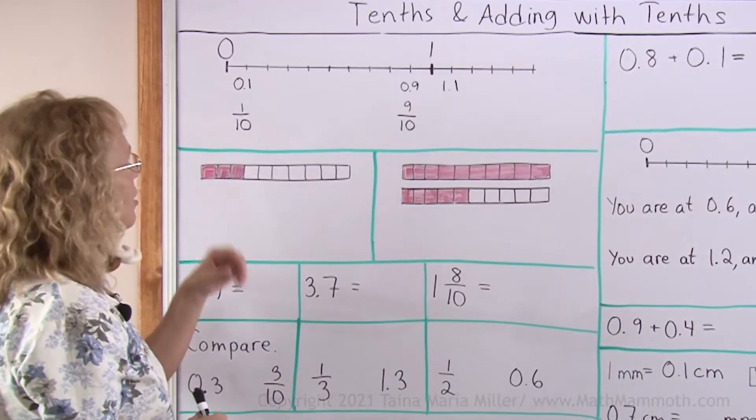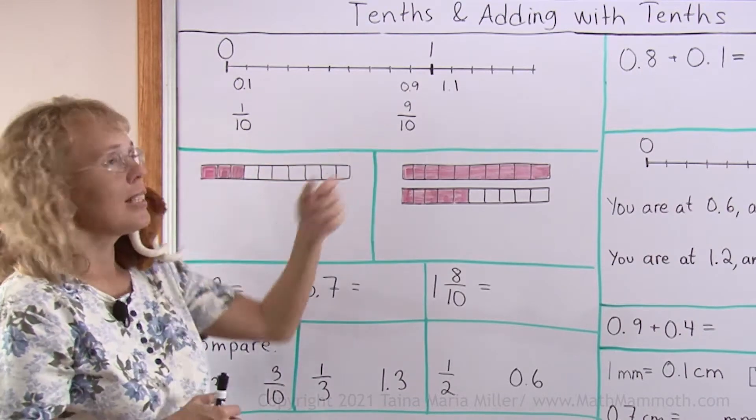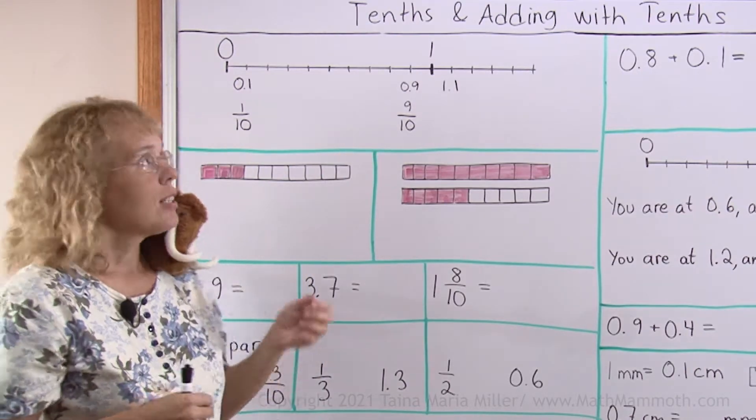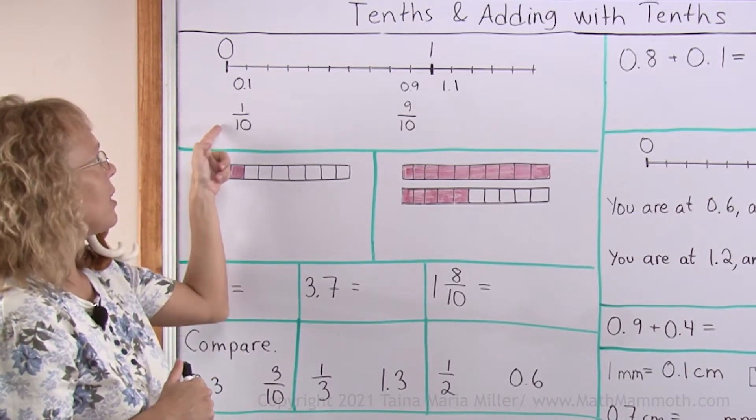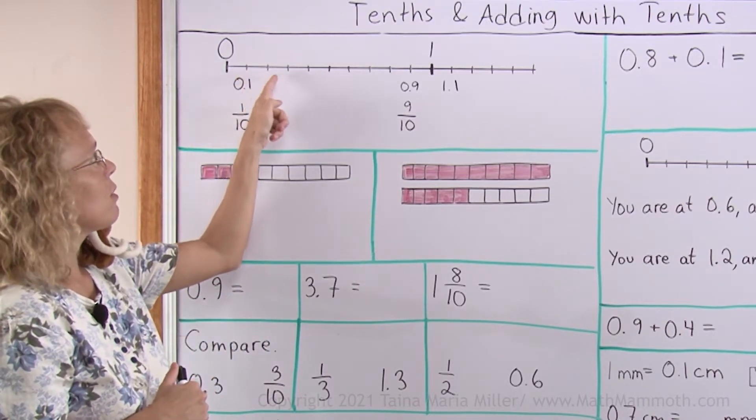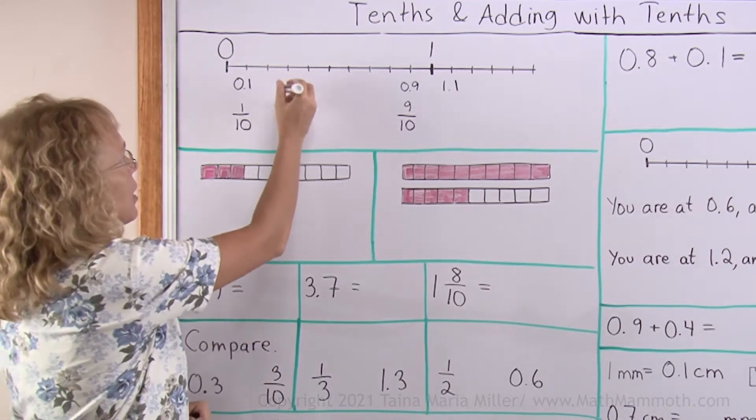Here I have a number line from 0 to 1 and a little bit beyond. Between 0 and 1 it is divided into 10 parts, so each part is 1 tenth. As a fraction I would write 1/10 for this tick mark and 3/10 for this tick mark.